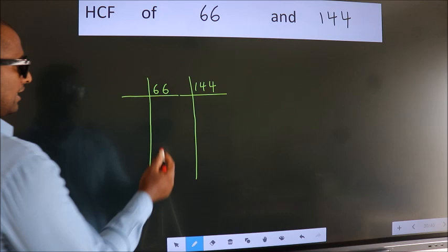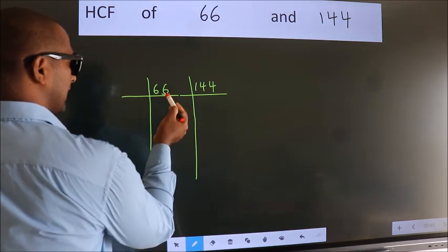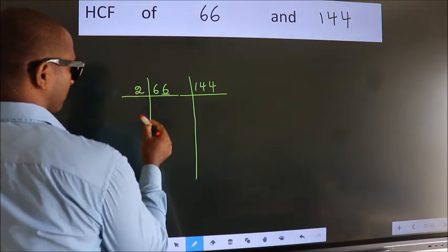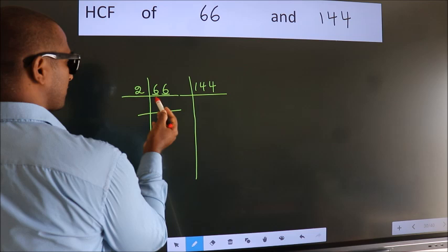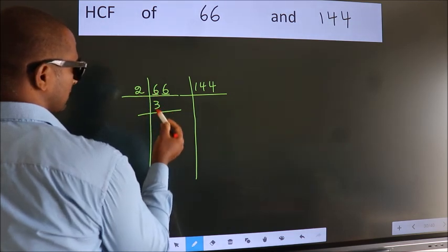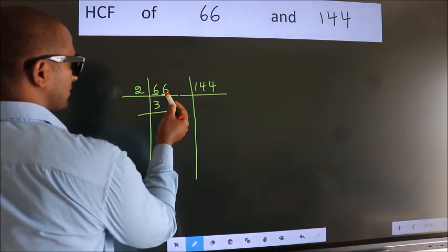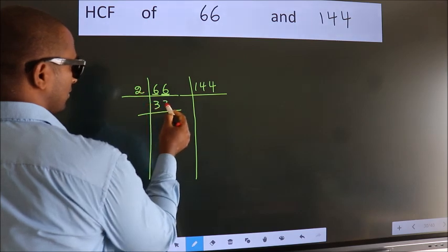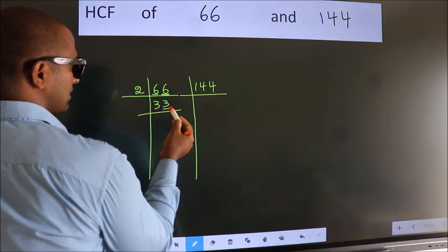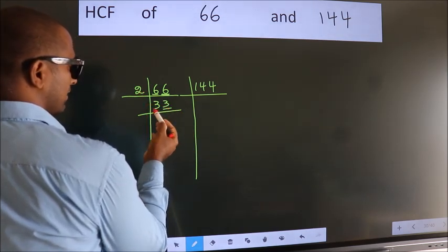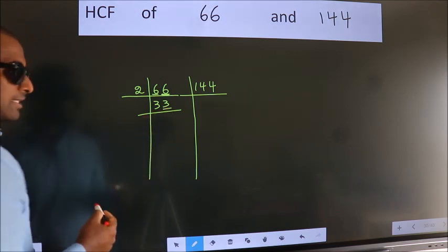Last digit 6, even, so take 2. First number 6, when do we get 6 in 2 table? 2 times 3 is 6. The other number 6, when do we get 6 in 2 table? 2 times 3 is 6. Last digit 3, not even, so this number is not divisible by 2.